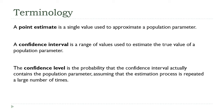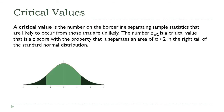A confidence interval is a range of values used to estimate the true value of a population parameter. The confidence level is the probability that the confidence interval actually contains the population parameter, assuming that the estimation process is repeated a large number of times.